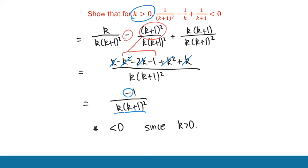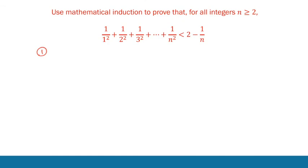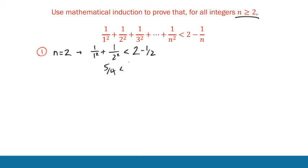Now let's get into the induction proof itself, following our four steps. Step 1: substitute the lowest value. For us this is n = 2, because we're asked to prove it for all integers greater than or equal to 2. Substituting gives 1/1² + 1/2² < 2 − ½, which evaluates to 5/4 < 3/2, and that's true. Therefore the result is true for n equals 2.